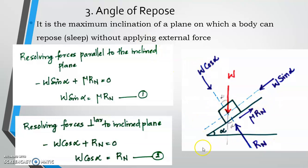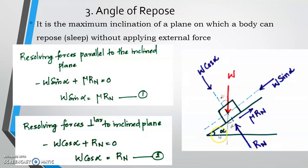The body is resting on an inclined surface. The inclined surface makes an angle alpha with the horizontal. The weight acts vertically in the downward direction. The normal reaction is perpendicular to the inclined surface, and friction is parallel to the inclined surface.